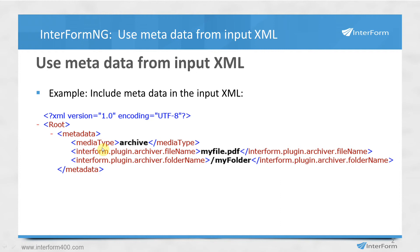One way to include such information is, for instance, that you can have a node in your input XML tree called metadata. Inside of that metadata node, we could have subnodes — tags with the names of the metadata that we want to update. For instance, a media type is assigned or should be assigned to the value of archive. And since we are creating PDF, we can also assign a name to the output PDF file and a folder in which we intend to place that file.